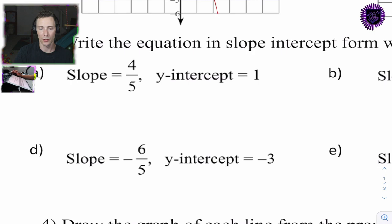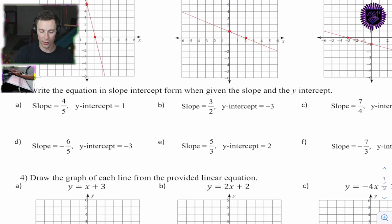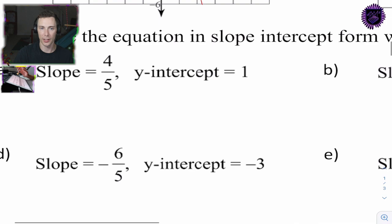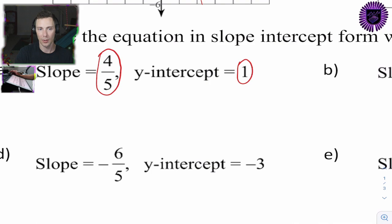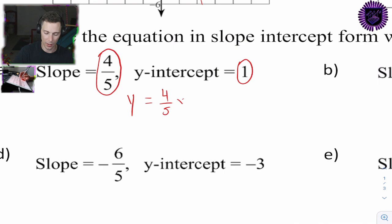For question 3, we write the equation in slope-intercept form when given the slope and the y-intercept. Slope-intercept form is y = mx + b, where m is the slope and b is the y-intercept. For 3a it's simply y = 4/5 x + 1 — here's the 4/5 and there's the 1.